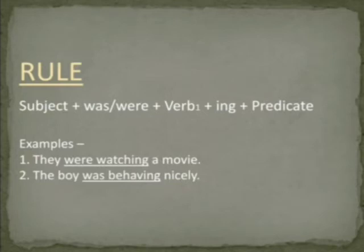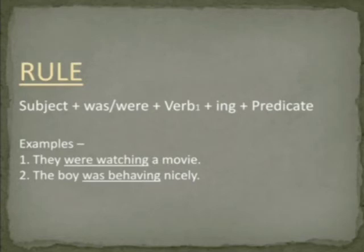Second example: The boy was behaving nicely. Here, 'the boy' is the subject. We have used 'was' here as the subject is singular. 'Behave' is the first form of the verb, with -ing added, and 'nicely' is the predicate.